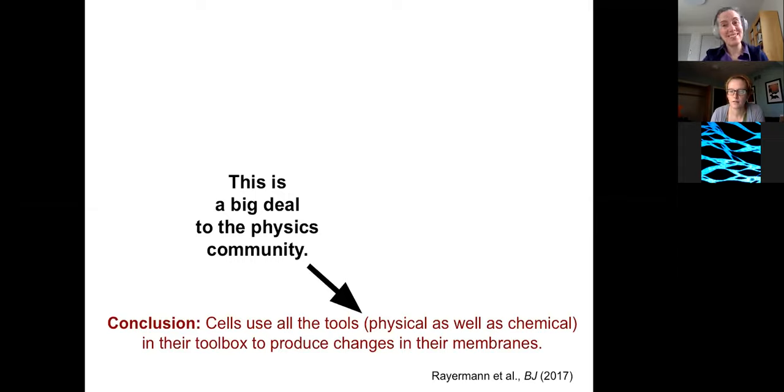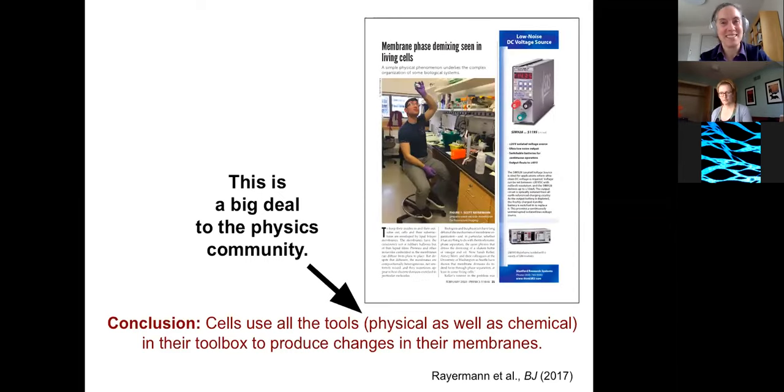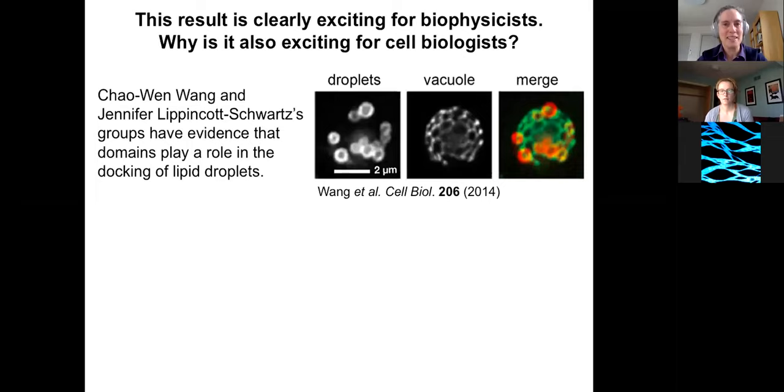All right, the conclusion is that cells use all the tools at their disposal, physics, and chemistry. They don't know that there's a difference between the departments in their toolbox to produce changes in their membrane. This is really nice for the physics community, like this is what we would like to think. And it was written up by Physics Today, which was really nice. It's also a big deal for the cell biologists. There are two different groups of Chowen Wang and Jennifer Lippincott-Schwartz, and they have evidence that these domains play a role in the docking of lipid droplets. Lipid droplets are fuel packets. They contain neutral lipids that that cell is going to put inside of its vacuole to then use as fuel for when there's glucose again in the system.